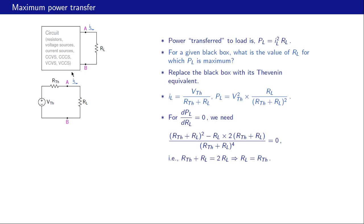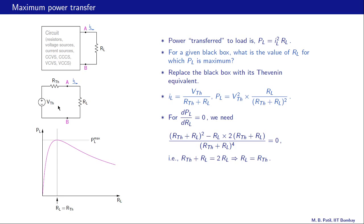So if we have a linear circuit, we can find its Rth, and then if the load resistance is equal to Rth, maximum power transfer will take place from the original circuit to RL. Looking at a plot of PL as a function of RL, the maximum occurs at RL equal to Rth.